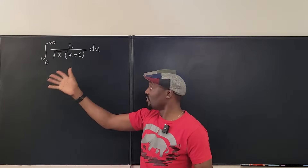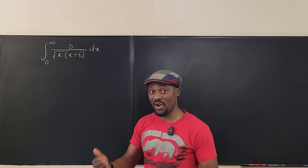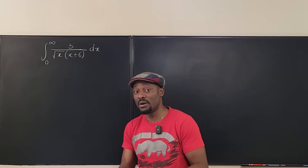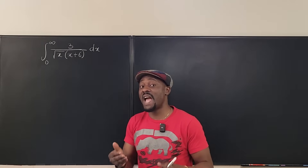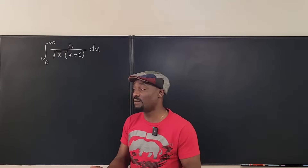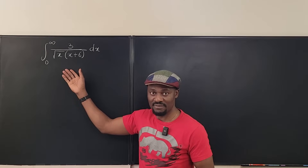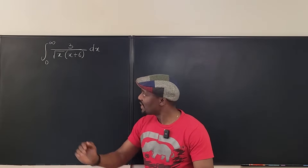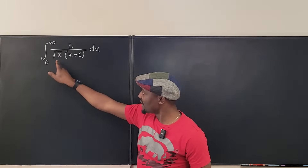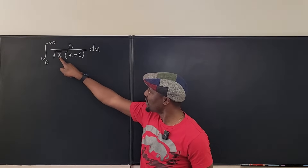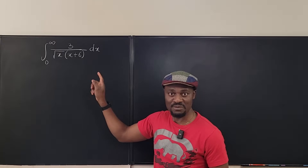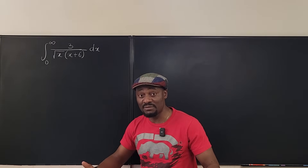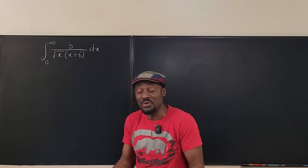You cannot just integrate and plug in infinity. You have to replace infinity with a letter, say T or R, and say as that letter goes to infinity, I'm going to evaluate my answer. However, if you look at the bottom, we still cannot plug in zero because the denominator becomes zero, giving a vertical asymptote and a discontinuity that you cannot remove.